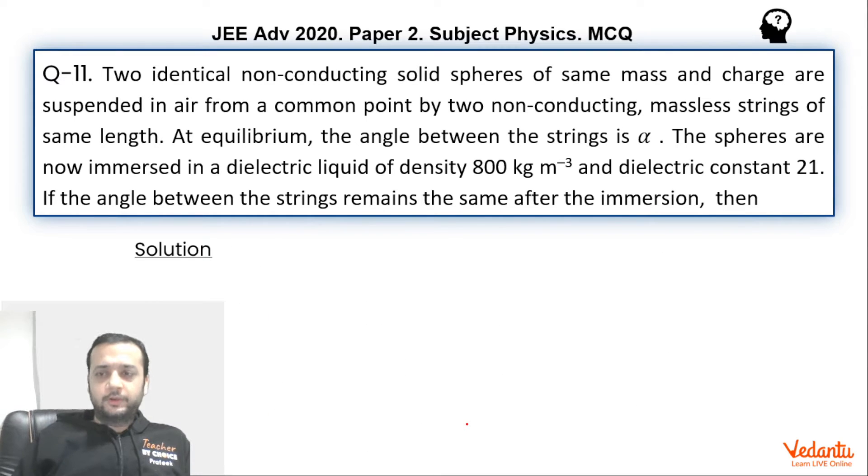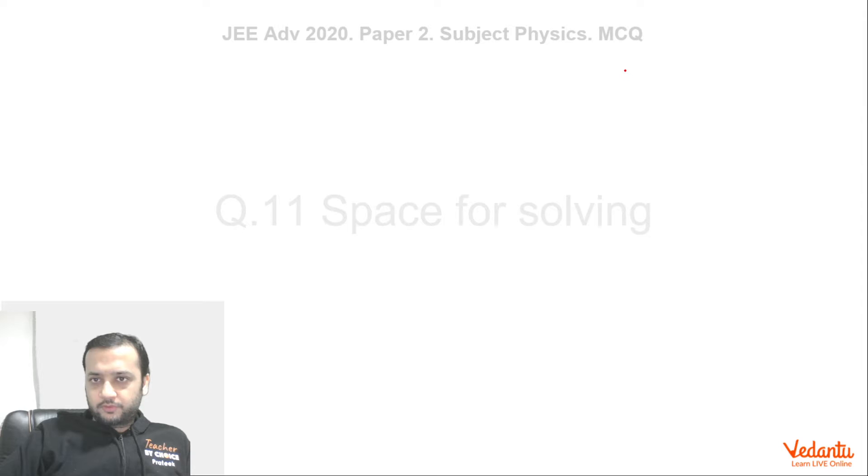So how do we do this? Again, see if you see carefully, the initial situation is this when they are not dipped in any liquid. So this angle is alpha. So we can say that this angle will be alpha by 2. So if you see one of these spheres, there are three forces acting on this: tension, gravity and this will be electrostatic repulsion.